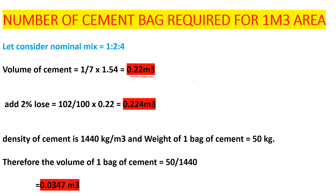To this volume of cement we add the 2% loss, so that is 102/100 × 0.22, which gives us 0.224 cubic meters of cement. The density of cement is 1440 kg per cubic meter, and the weight of one bag is 50 kg.